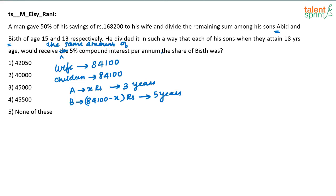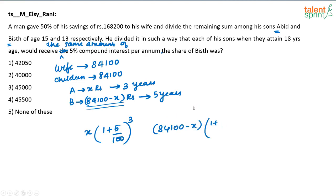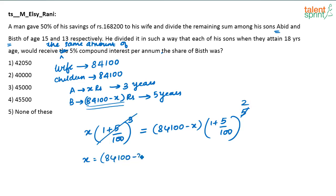The question asks for the share of B, so we need to find (84,100 − x). For son A: the amount is x × (1.05)^3. For son B: the amount is (84,100 − x) × (1.05)^5. Setting these equal, the (1.05)^3 terms cancel, giving x = (84,100 − x) × (1.05)^2, which equals 1.1025. Solving this, x is approximately 44,100.